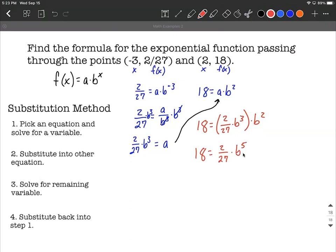My next goal is to isolate the b to the fifth power. I'm going to make this into a power equation if at all possible. So I need to get rid of the twenty-seven and the two.